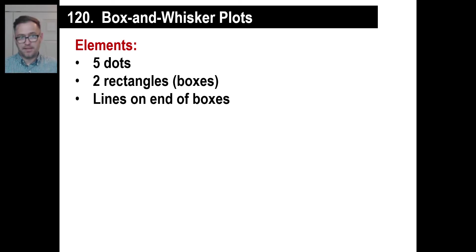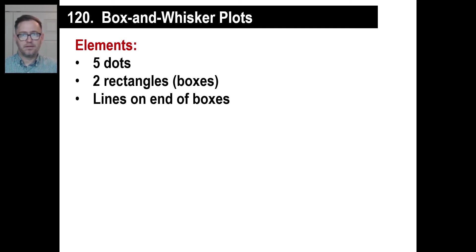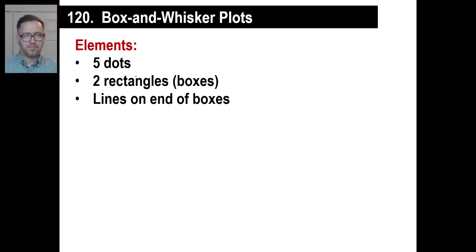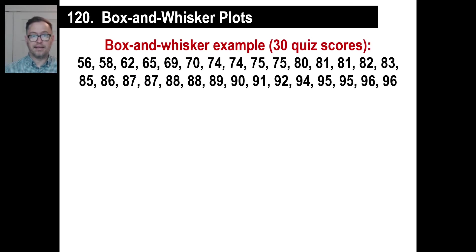This is what it has in it, and you might want to write this down because you're going to be doing this for the rest of the entire book. It has five dots. It has two rectangles, which are basically boxes — that's the box part. And then lines on the end of the boxes — those are the whiskers. So let's look at an example of how this goes, and you want to write down the steps on how to do this.